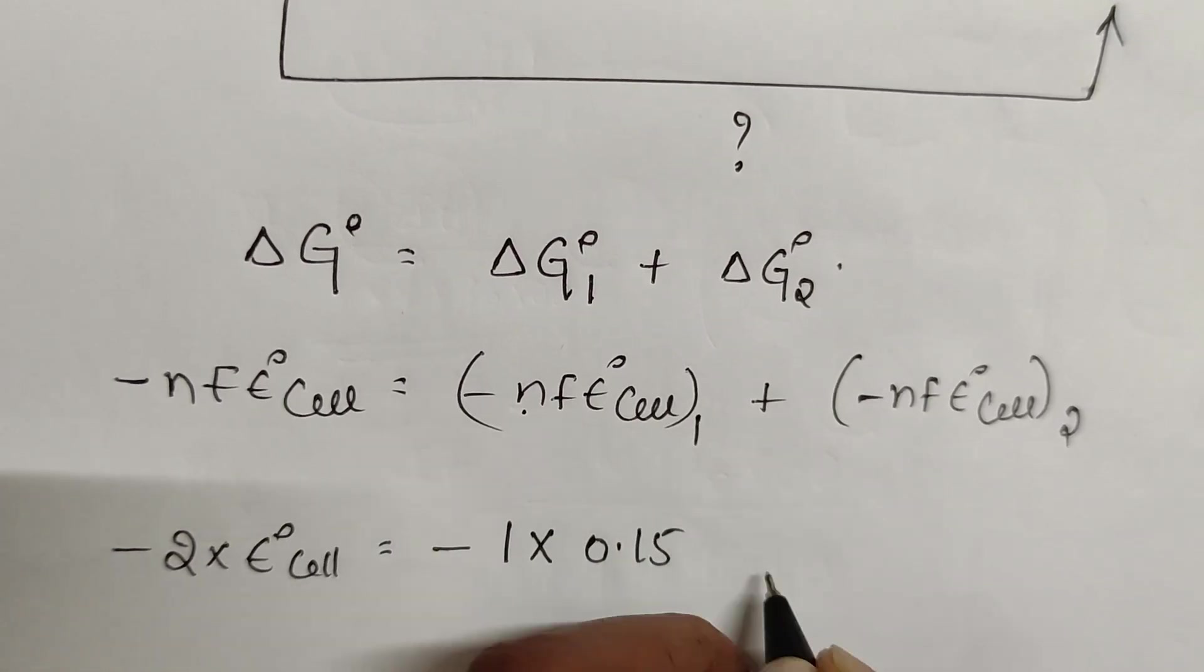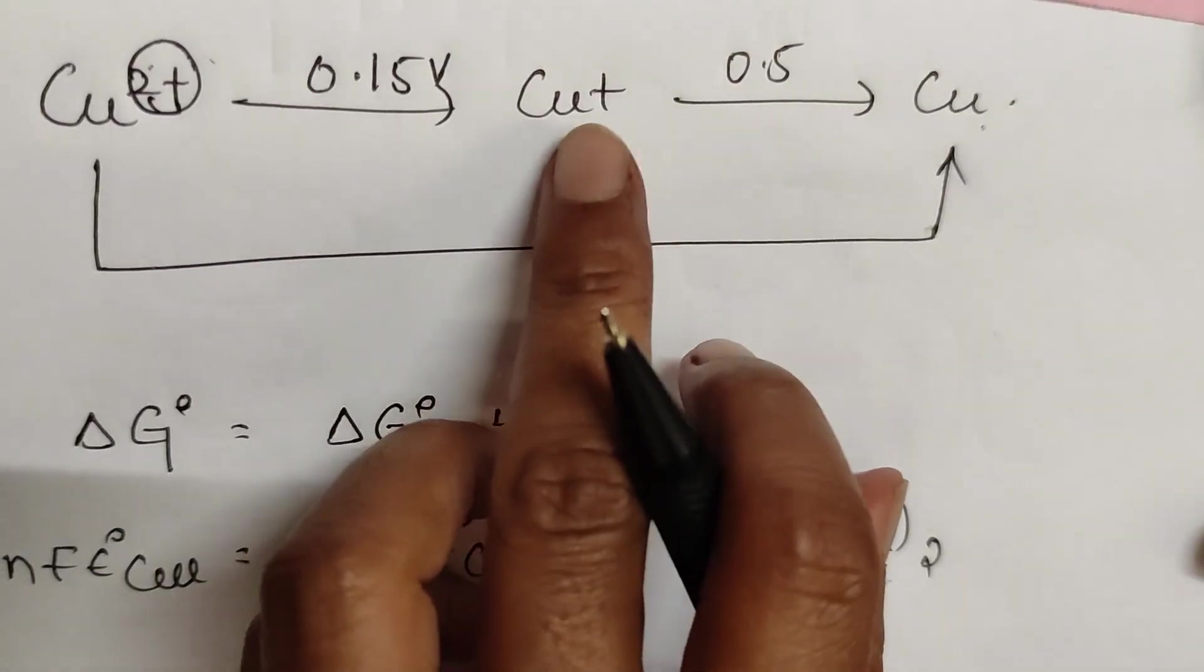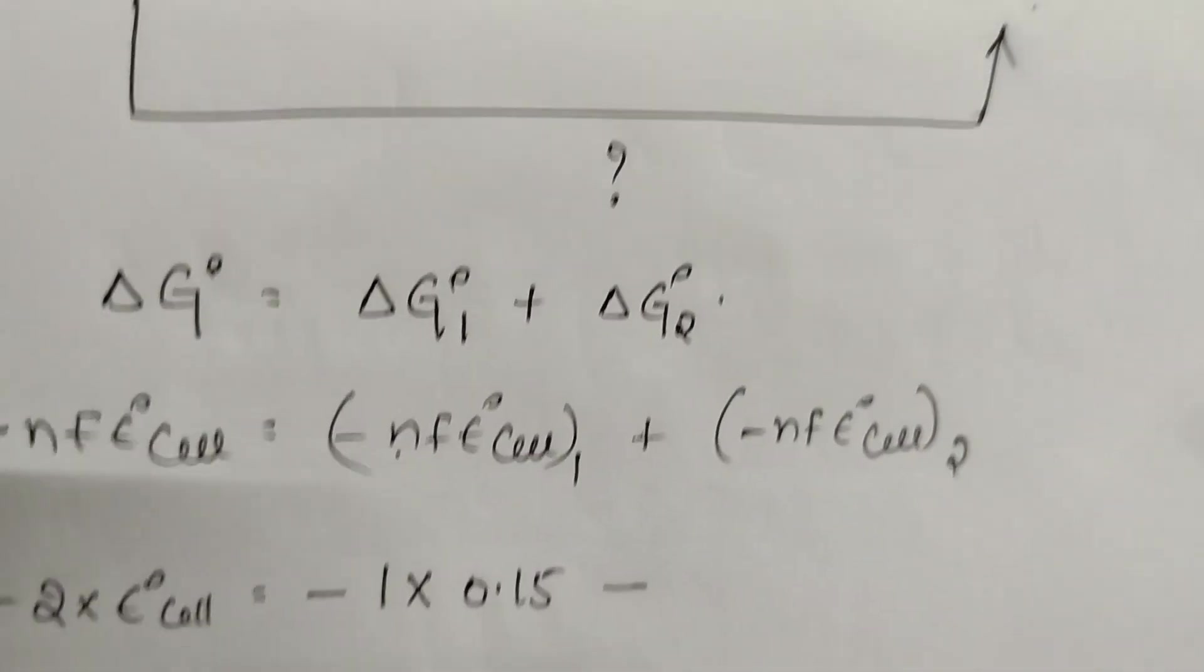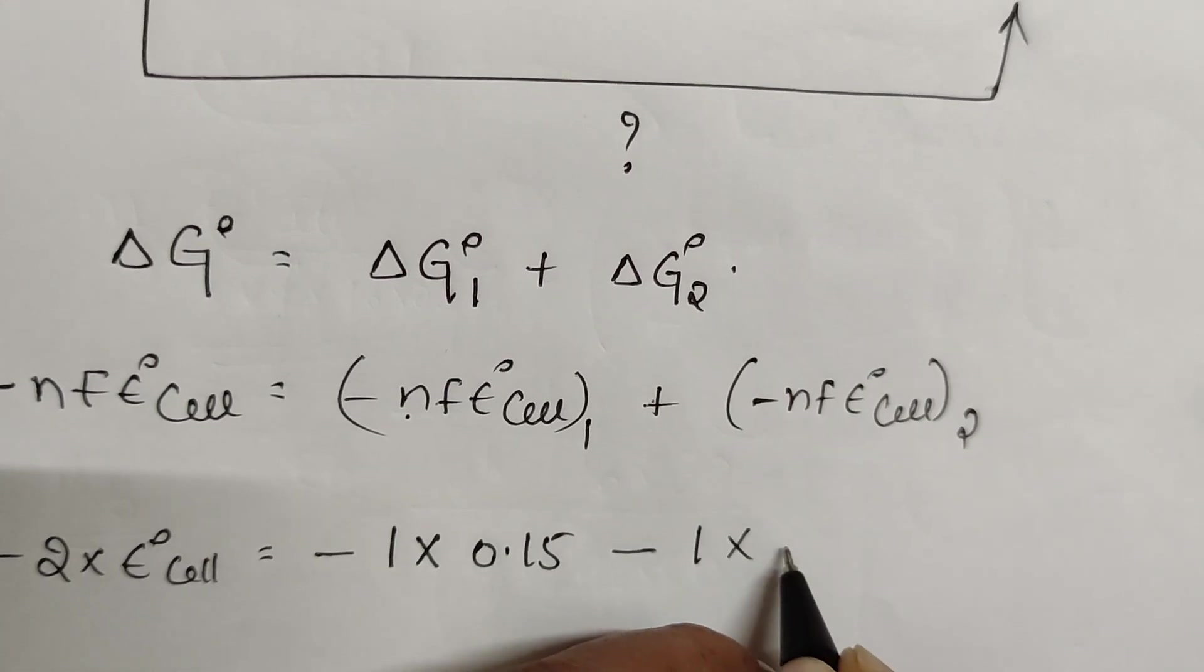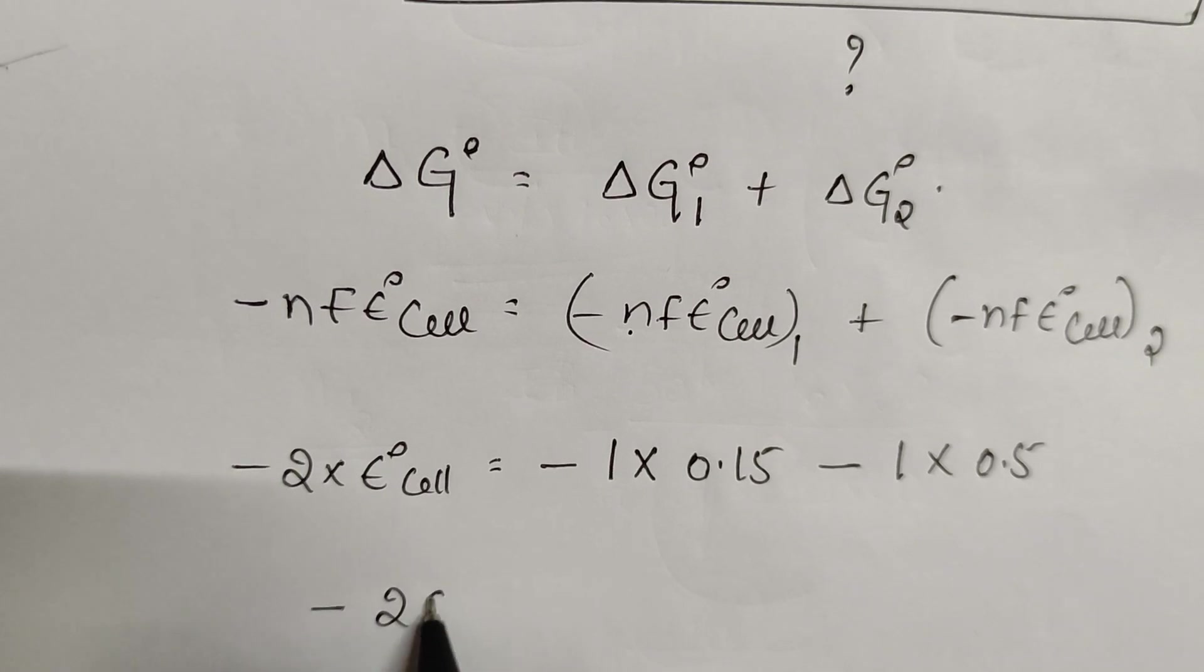E°cell of the first reaction is 0.15, and the number of electrons change here from plus 1 to 0 is 1. Faraday is cancelled. E°cell value is 0.5.